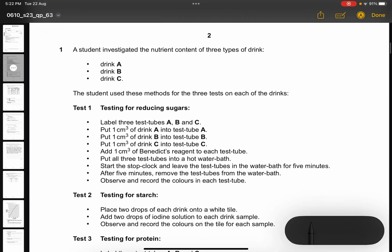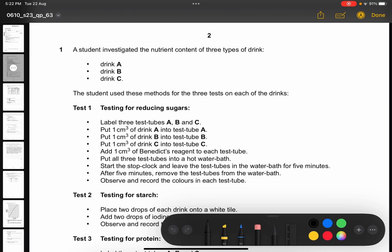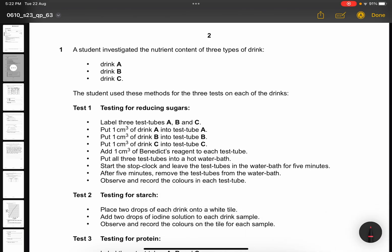Question 1. A student investigated the nutrient content of 3 types of drinks: Drink A, Drink B, and Drink C. The student uses these methods for the 3 tests on each of the drinks. Test 1, testing for reducing sugars. Label 3 test tubes A, B, C. Put 1cm cube of drink A into test tube A, 1cm cube of drink B into test tube B, and 1cm cube of drink C into test tube C. Add 1cm cube of Benedict reagent to each test tube. Put all 3 test tubes into a hot water bath. Start the stop clock and leave the test tubes in the water bath for 5 minutes. After 5 minutes, remove the test tubes from the water bath, observe and record the colors in each test tube.